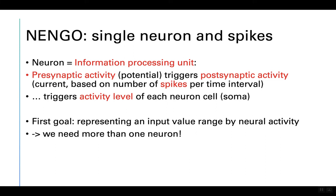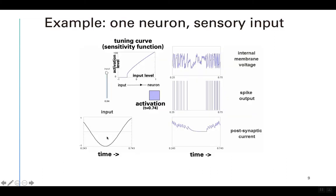The first thing I would like to show is how an input value — for example, a sensory intensity value — can be represented by neural activity. We will need more than one neuron for that. Here we have a Nengo example for a leaky integrate-and-fire neuron. We have an input over time: first positive, then negative, then positive again. The neuron tries to represent this input by its activity over time and has a specific sensitivity function.